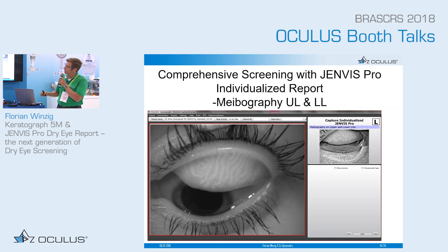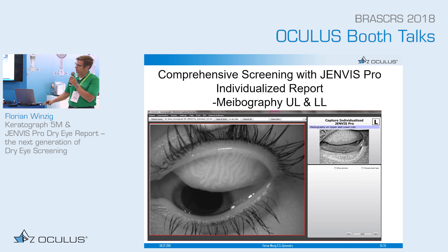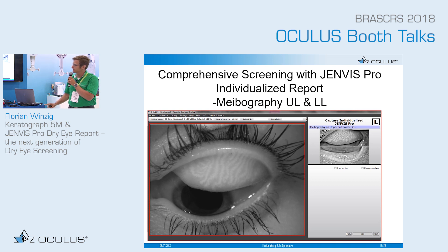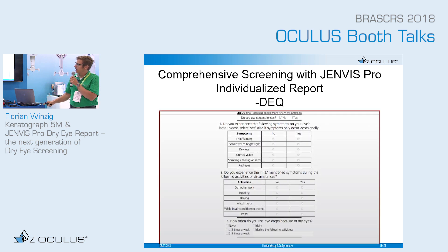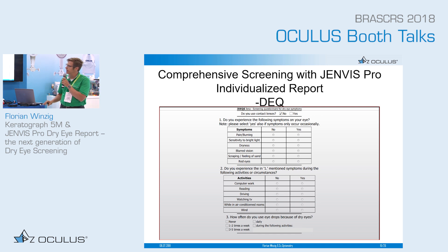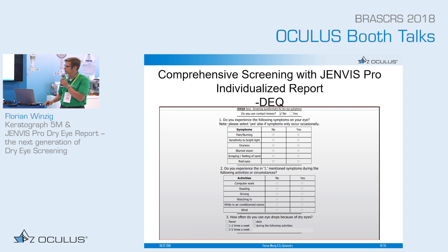To understand the reason behind blepharitis, we perform meibography of the upper and lower lids. Using a grading scale, you assess how many meibomian glands have dropped out and how many areas remain. Additionally, you can import dry eye questionnaire results recorded during screening so you do not need to repeat them.